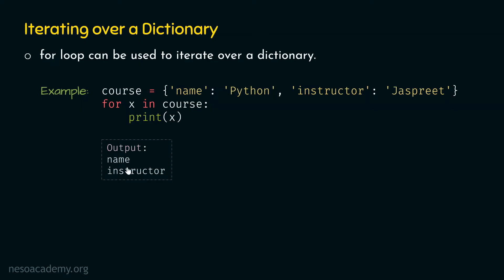The output of this program is name, instructor. One thing to note here is that if we use this statement, we will get keys and not values. But if we want to access values of this dictionary, we can do that as well. This is what our next topic is all about.